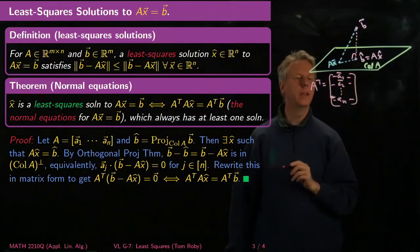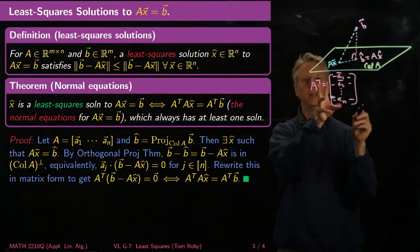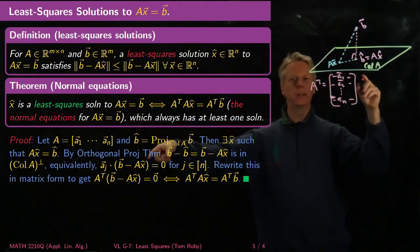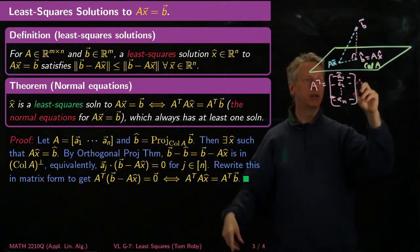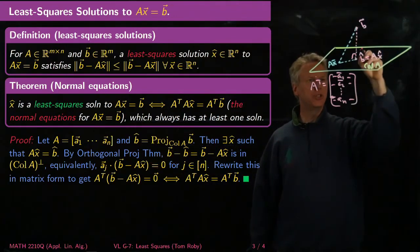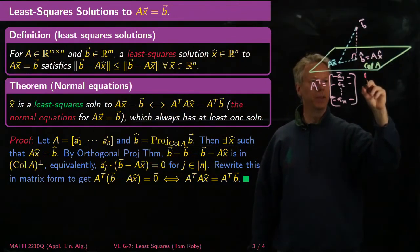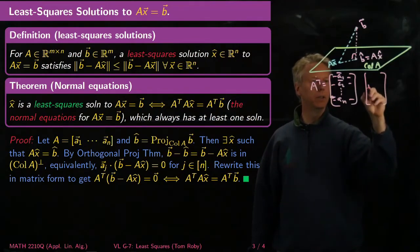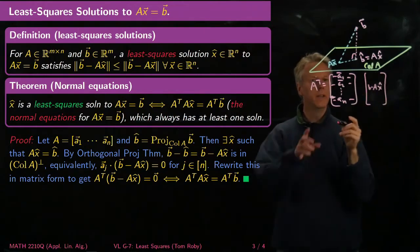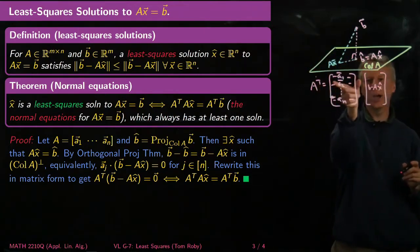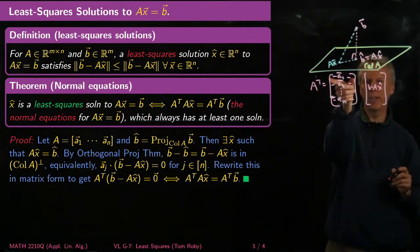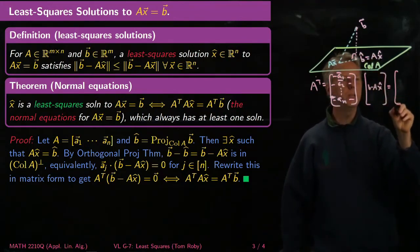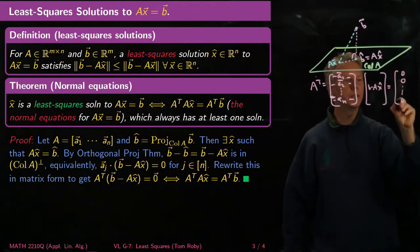So I'm taking each of these columns, and I'm multiplying it by B minus AX hat. So taking the dot product of these things, I take the dot product of A1 with this, I get zero. I take the dot product of that with this, I get zero. So this should be equal to zero, zero, ... zero.